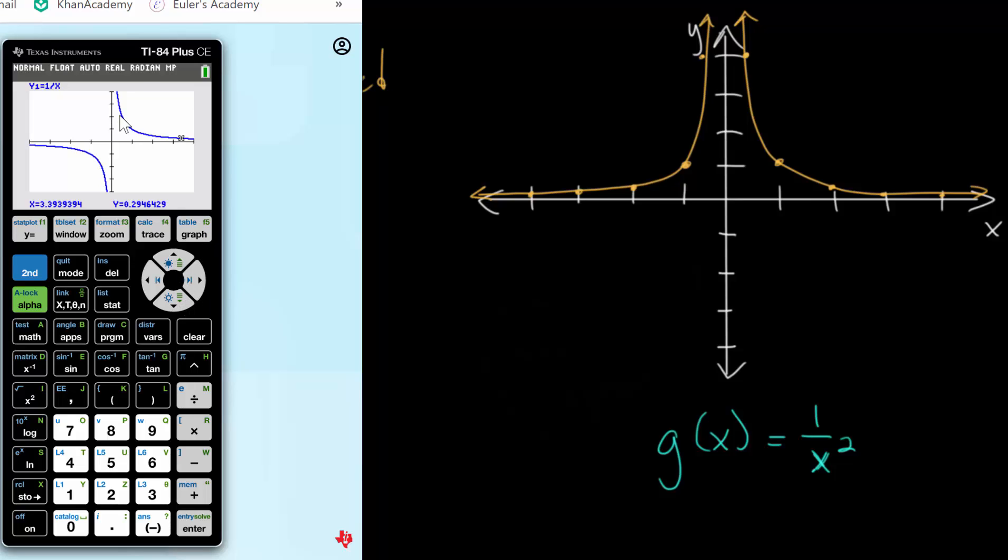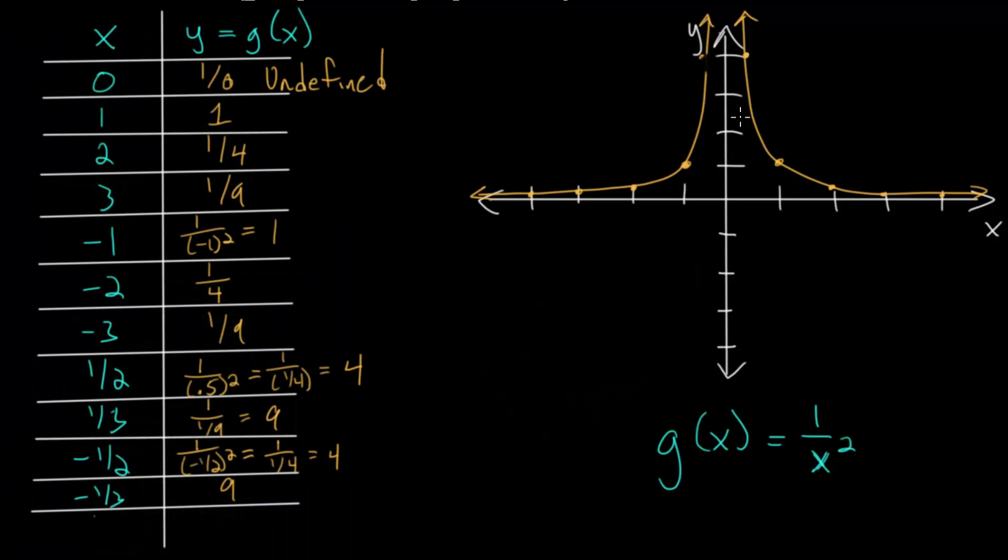Now, one last point I want to mention is this point where it's not defined. Essentially, this boundary layer here at x equals 0. In fact, we have a specific name for this. We call this an asymptote.